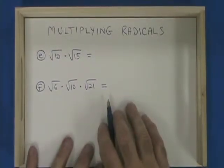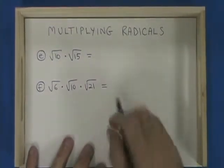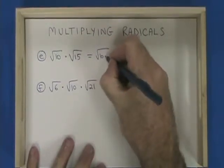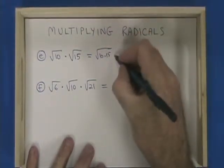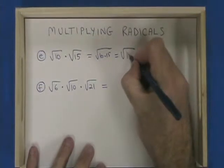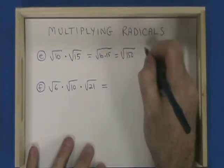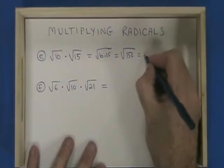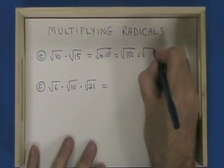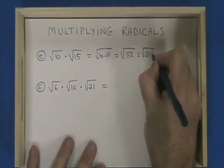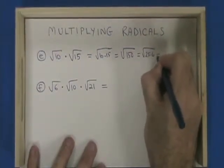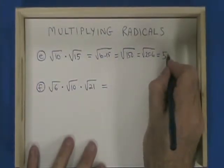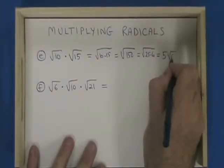Here we have the square root of 10 times the square root of 15. That gives us the square root of 10 times 15, which is the square root of 150. 150 has a factor that is a perfect square, which is 25. So we break it into 25 times 6. The square root of 25 is 5, which comes outside, and the 6 is trapped on the inside.